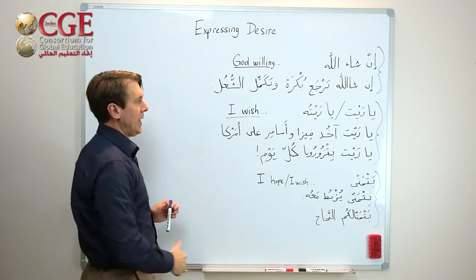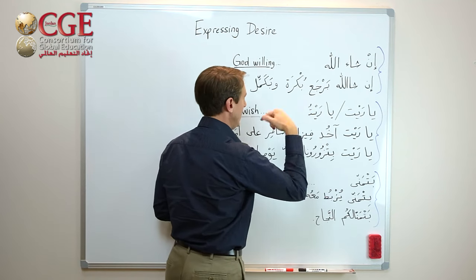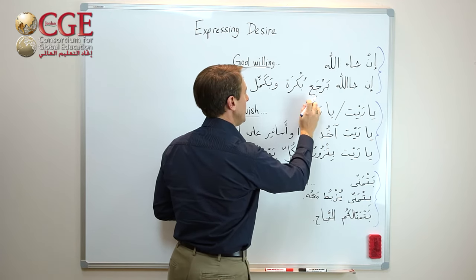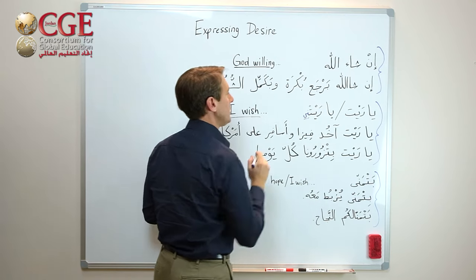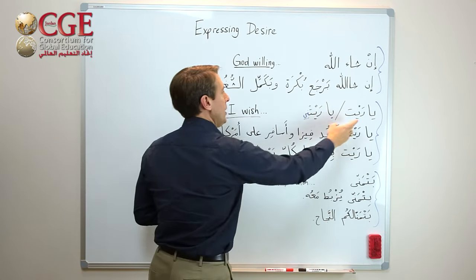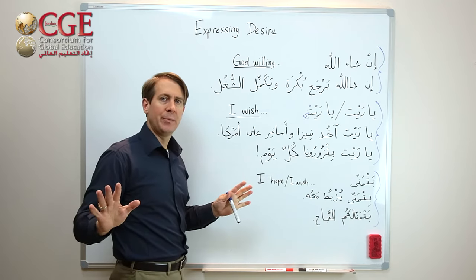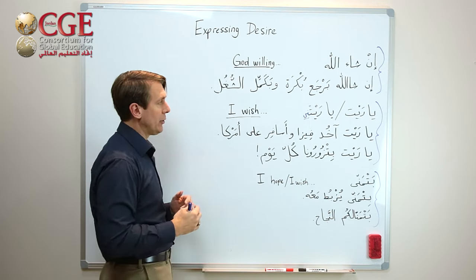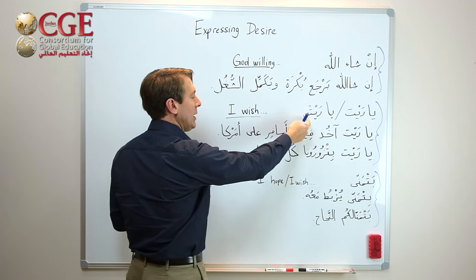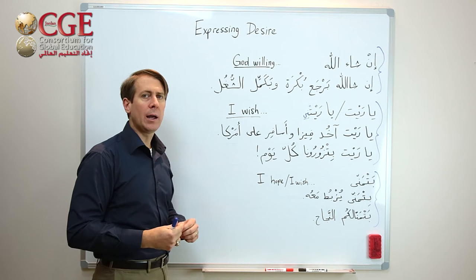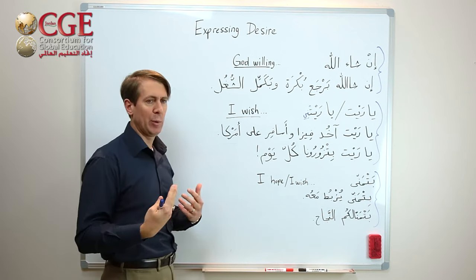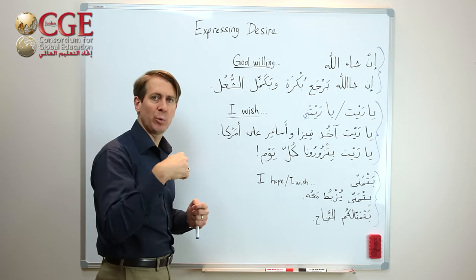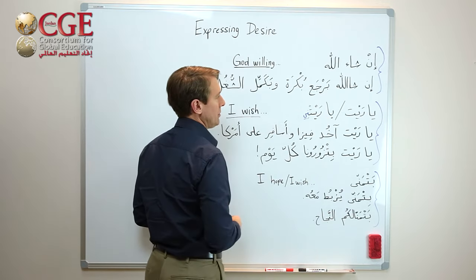'Yareet' literally means 'he wishes,' but to make it 'I,' you say 'yareetni.' So 'yareet' and 'yareetni' mean the same thing — with one you have an attached pronoun and with the other you do not. The attached pronoun here functions like a verbal object pronoun, as in 'he gave me,' not a possessive like 'his house' — 'beto.' So you'd say 'bayti' for 'my house,' not 'bayt ni.' The 'ni' on 'yareetni' is like attaching it to a verb. So 'yareetni' means 'I wish.'